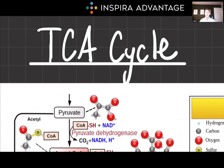Today we're exploring the TCA cycle, known by many names like the citric acid cycle or Krebs cycle. This cycle is the cornerstone of cellular respiration — absolutely crucial for energy production in aerobic organisms. This is absolutely huge for the Bio/BioChem sections of the MCAT. Expect to see anywhere from two to five questions relating to the TCA cycle.